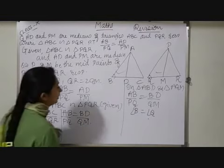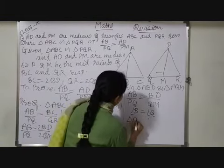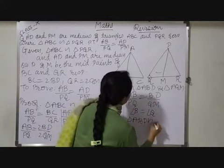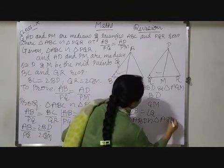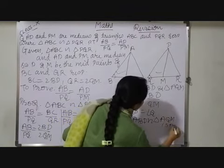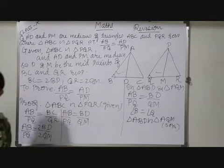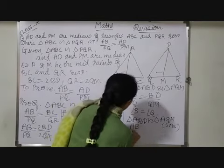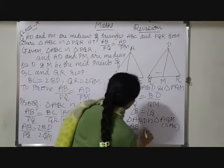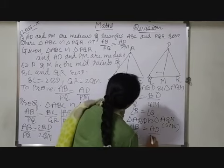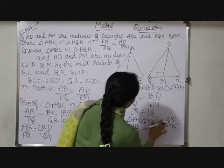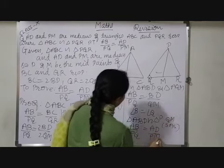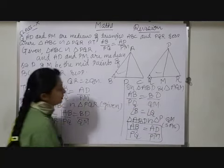So triangle ABD similar to triangle AQN. Reason is SAS criteria. Though triangles are similar, so by simplicity I can write down any two parts equal. So here I can write AB upon PQ is equals to AD upon PM. A very simple proof. Hope it understood to you. Thank you.